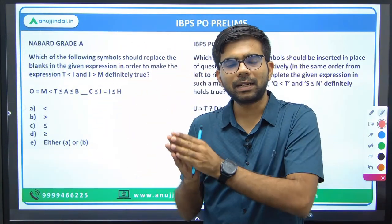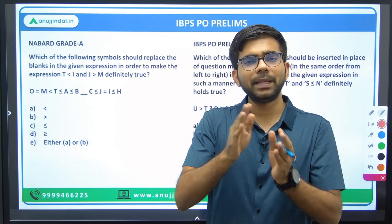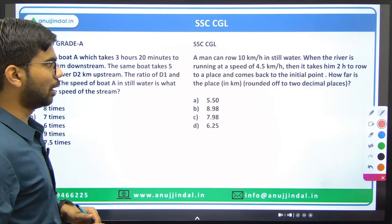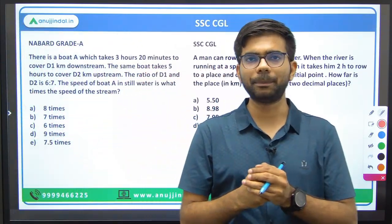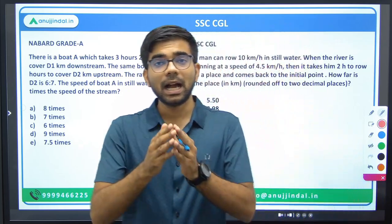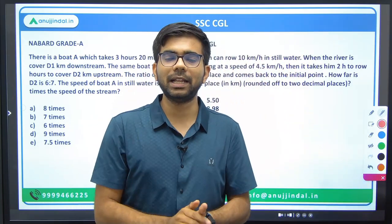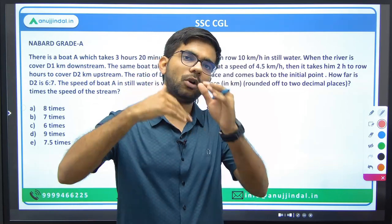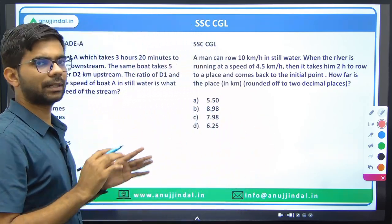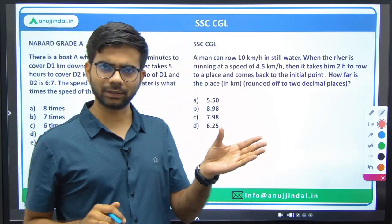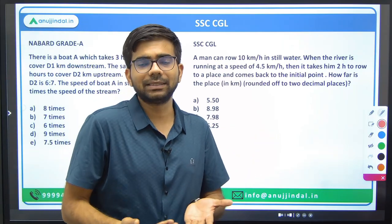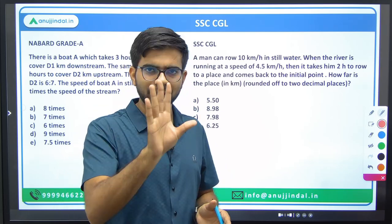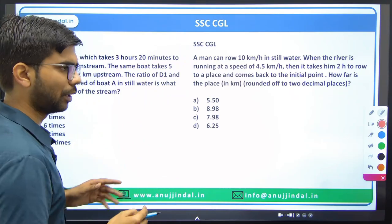So the findings so far: NABARD's exam is easier than RBI but matches the IBPS PO Prelims level. IBPS PO Mains level is slightly harder than NABARD, so we can skip that, though you can practice a little from it if you want to be on the safer side — although the examiner should ideally not raise the level significantly. You can do a bit of higher-level practice just to be safe.